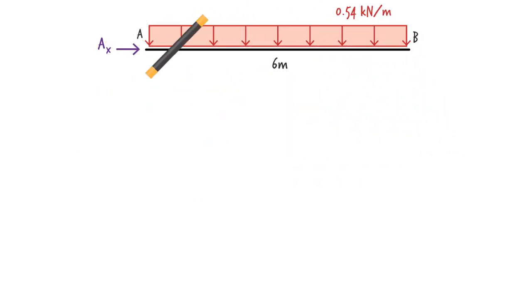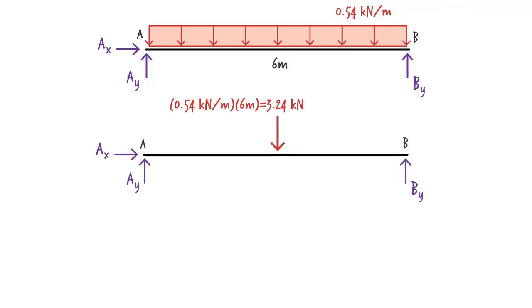We start by calculating the beam's support reactions. Here is the beam's free body diagram showing the reaction forces as well as the applied load. To write the equilibrium equations, once the free body diagram has been drawn, we can replace the distributed load with its equivalent concentrated load. The magnitude of the concentrated load equals the area defined by the distributed load. In this case, the area of the rectangle is 6 times 0.54, or 3.24 kN. The load is to be placed at the geometric center of the area, which in this case would be at the midpoint of the beam.